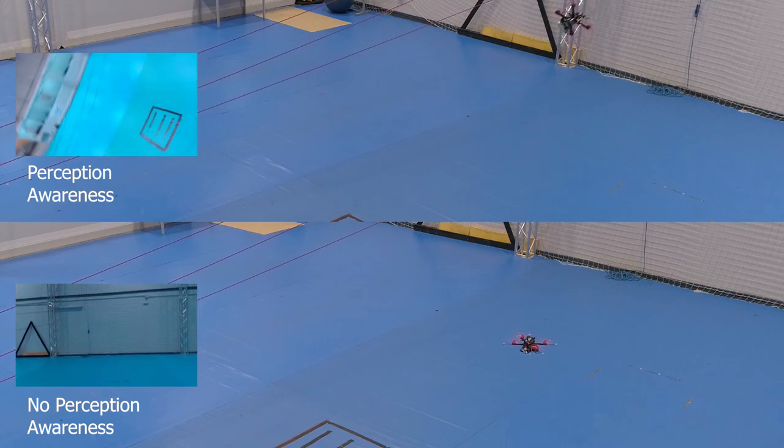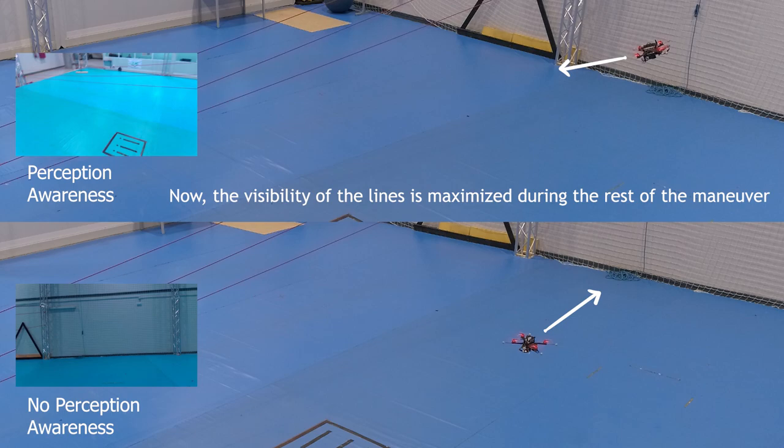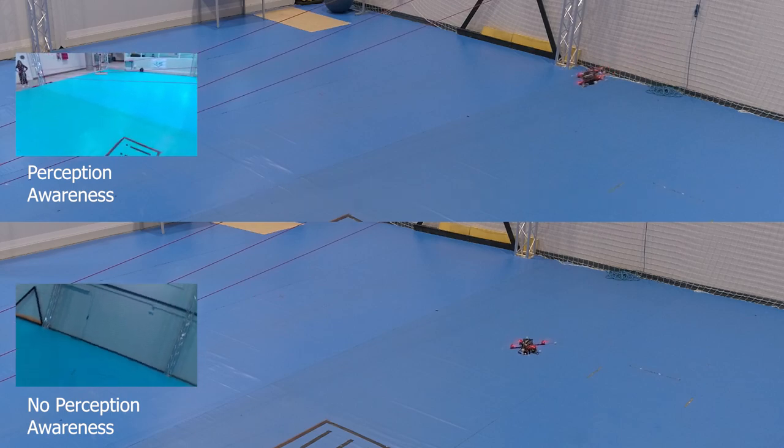Both trajectories result in the same perching state, but the perception-aware case is able to keep the power line within the quadrotor's camera view until the end of the maneuver.